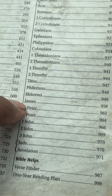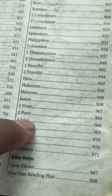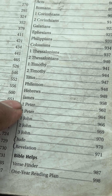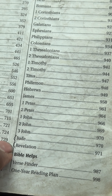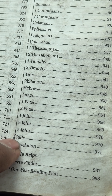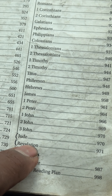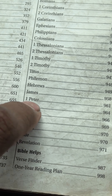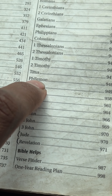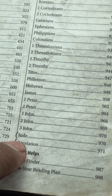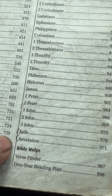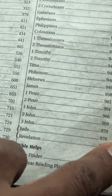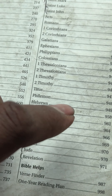Then you have the general epistles, going from James to Jude. Jude is only one page, just like Philemon. Then you have Revelation, the last book in the Bible.